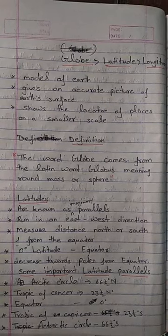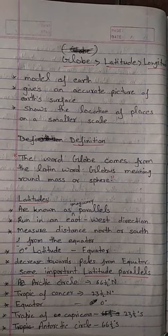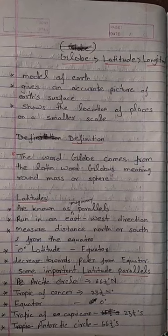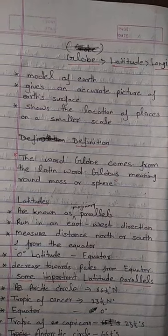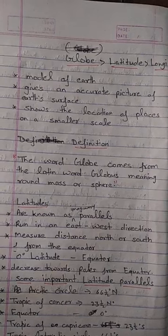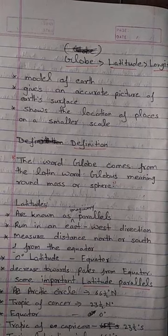Zero degree latitude is known as the equator, and it divides the globe equally into two equal halves.